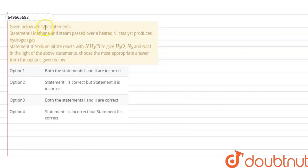Hello everyone, let's start this question. Given below are two statements. Statement 1 is methane and steam passed over a heated nickel catalyst produces hydrogen gas. Statement 2 is sodium nitrite reacts with NH4Cl to give H2O, N2 and NaCl. In the light of the above statements, choose the most appropriate answer from the options given below.